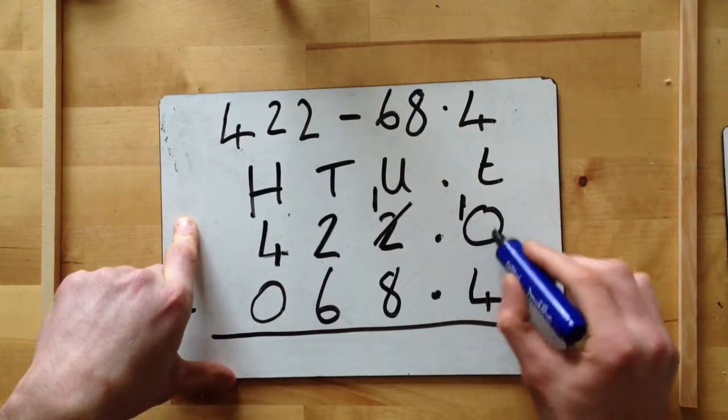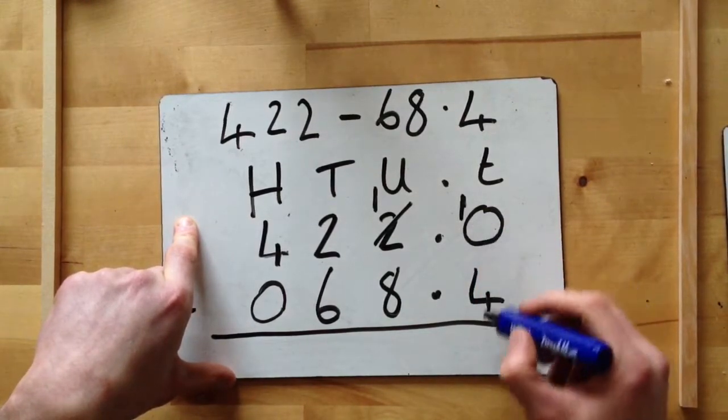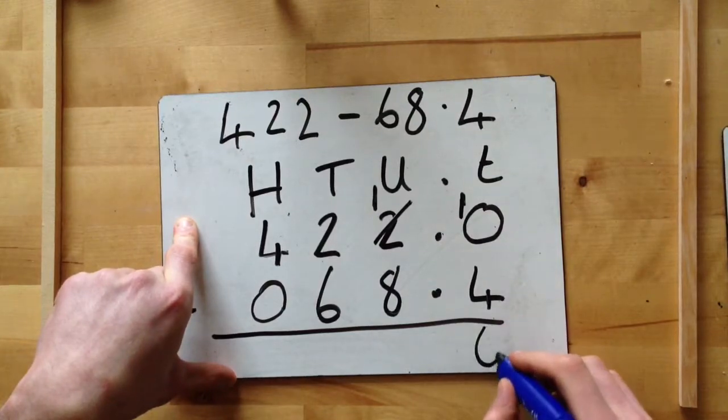So the one and the zero make a ten. So then we go ten take away four, we can do, which is six.